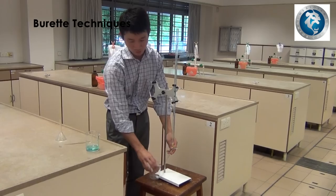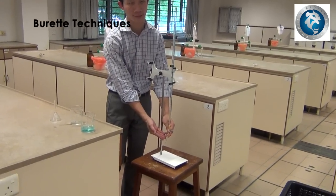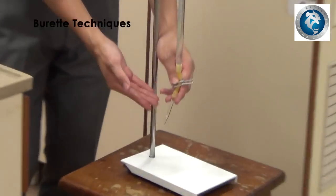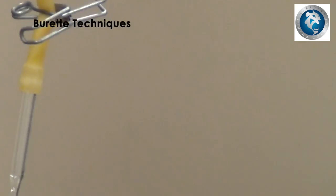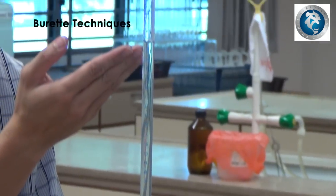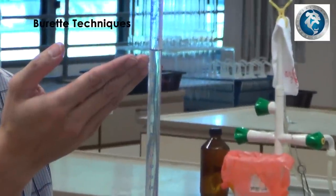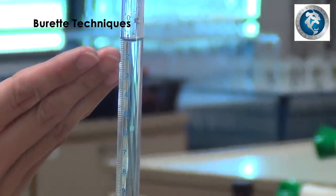Once you are done, ensure that there are no air bubbles on the tip of the burette and observe the solution level at eye level using the bottom of the meniscus as a guide. This will be the initial reading that you will record down for your burette reading.